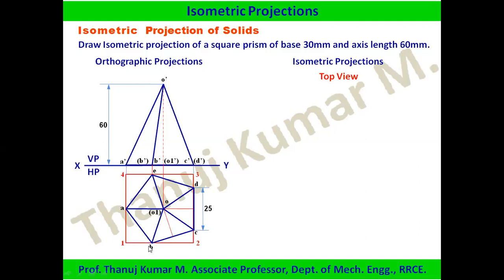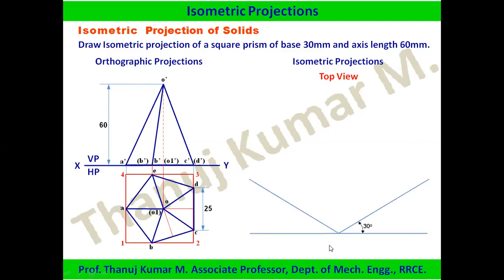Draw the isometric view starting with the top view: first a horizontal line, then 30-degree angle lines on either side. Measure distances such as 1-2 or 2-3 from the orthographic box, convert each to isometric scale, and locate them on the isometric projection.